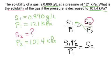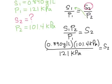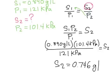Let's go ahead and plug in the numbers. And now we can plug everything into our calculator and solve for S2. And we find that the new solubility of the gas is going to be equal to 0.746 grams per liter.